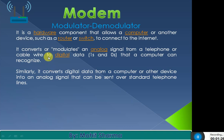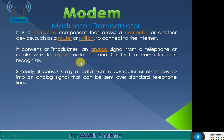What is a modulator? It converts or modulates an analog signal from a telephone or cable wire into digital data that a computer can recognize. The signal coming from a telephone wire or cable wire is an analog signal, while the signal a computer understands is a digital signal in the form of zeros and ones. The process of converting from analog to digital is called modulation.